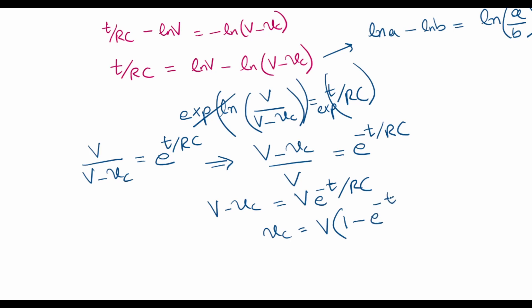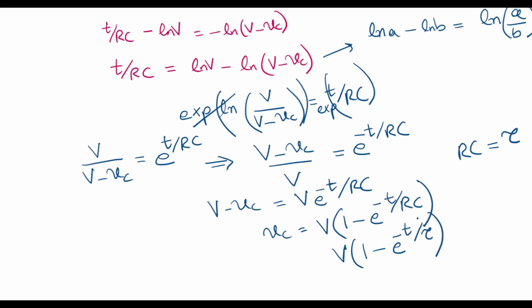Then VC can be written as V times (1 minus e to the power minus T/RC). RC is called the time constant tau, so we can write this equation as VC equals V times (1 minus e to the power minus T/tau).